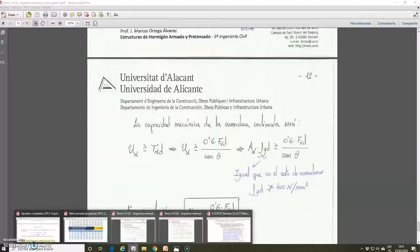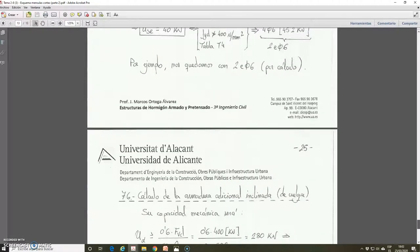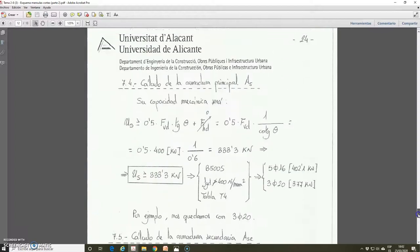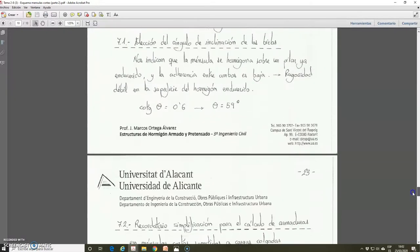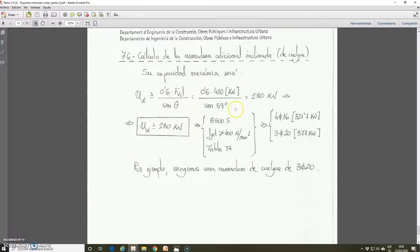We take it and we do the calculation, the corresponding calculation here. 0.6 FBD. FBD was 400 kN. And the sinus of theta, the angle of inclination of the struts, of the compressive struts, which was 59 degrees. We adopt 55 degrees for this angle. And we take that value. We introduce it in the expression. So the mechanical capacity of this additional inclined reinforcement is 0.6 multiplied by 400 kN divided by the sinus of 59. Then, the mechanical capacity must be higher or equal than 280 kN.